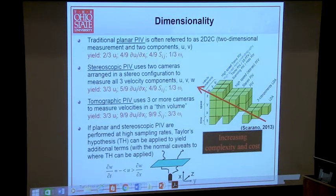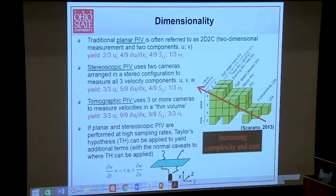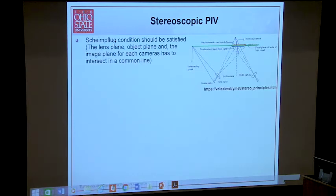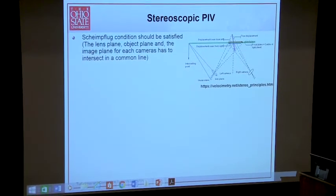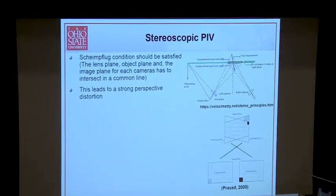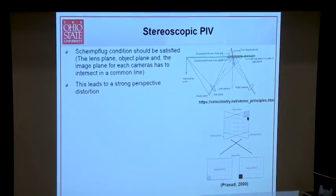Reviewing the dimensionality options: planar PIV gives two components in a plane, stereoscopic PIV gives three components in a plane, and tomographic PIV gives three components in a volume. For stereoscopic PIV, the Scheimpflug condition must be satisfied - the lens plane, object plane, and image plane all intersect at a common line.